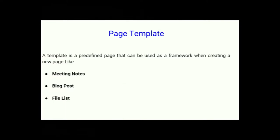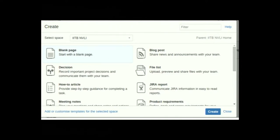Page templates: Confluence comes with many page templates. A template is a predefined page that can be used as a framework when creating a page. Meeting notes, blog posts, file lists, and more are available templates. Meeting notes are the easiest way to draft an agenda for an upcoming meeting and capture action items. Blog posts are the easiest way to share an announcement or status report among team members. File list lets you upload and display files for team members to view. You can use any template as per your content needs.